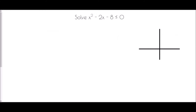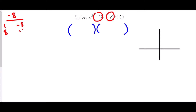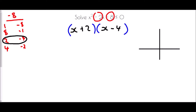Let's try that again with x squared take away 2x take away 8. Again, let's see if we can factorise. We need a pair of numbers which are going to multiply to make negative 8 but add to make negative 2. The pairs giving negative 8 are: 1 and negative 8, 8 and negative 1, 2 and negative 4, or 4 and negative 2. The pair that adds to make negative 2 is 2 and negative 4, so the factors are x plus 2 and x take away 4.